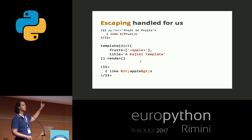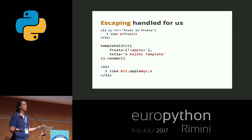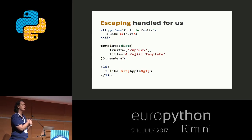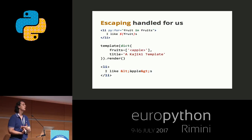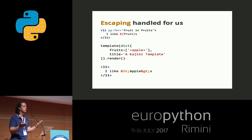Here is an example of the automatic escaping. If I render a Kajiki template with 'apple' as a fruit, but in this case 'apple' has angular brackets around it — so it should break our HTML because it creates an HTML tag that makes no sense. Kajiki detects it and prints the escaped version of the angular brackets: the less-than and greater-than entities instead. So you don't have to care too much about users writing malicious JavaScript in their comments. Even if you store the malicious code in your database, Kajiki will escape it for you and you won't be able to break your page.